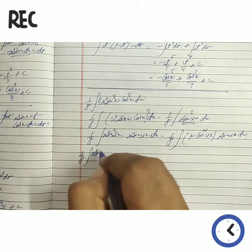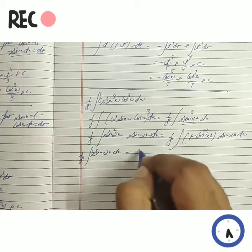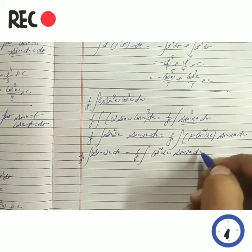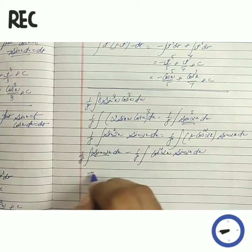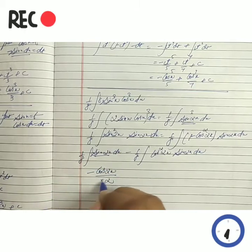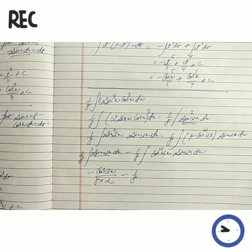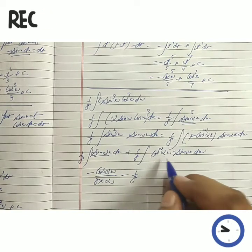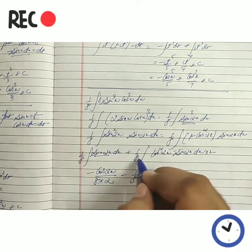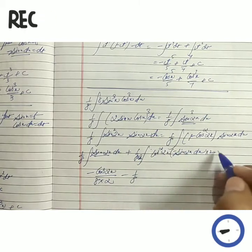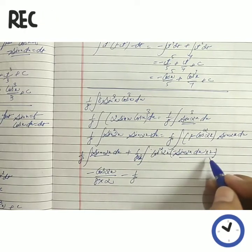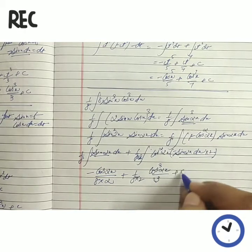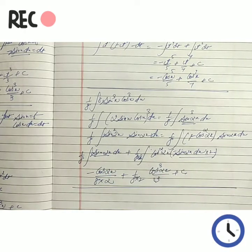We can do it without the substitution method also, by breaking it. We get (1/8) times the integration of sin 2x dx, minus (1/8) times cos²2x · sin 2x dx. The integration of sine is minus cosine, divided by the derivative of the angle. For the second term, the derivative of cos θ is minus sin θ, so we need the minus sign. The derivative of the angle becomes 2, so we multiply and divide by 2 for balance. Now this is a function with its derivative multiplied, so by the power rule: increase power by 1, divide by new power, plus C. This is the integration of an odd power of a function.